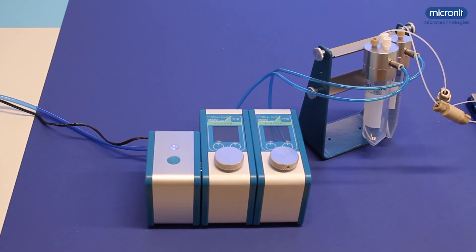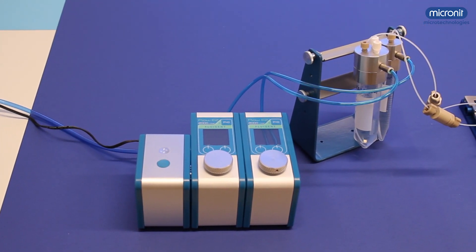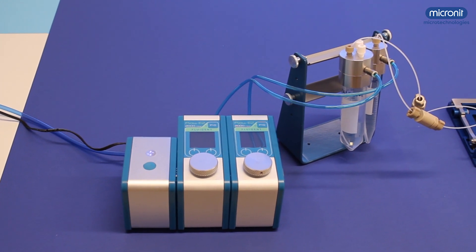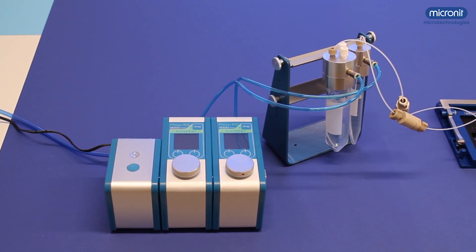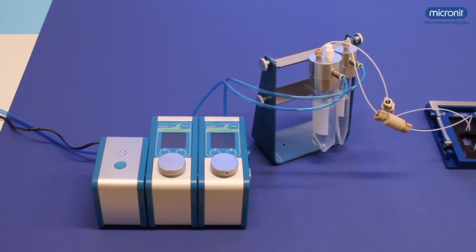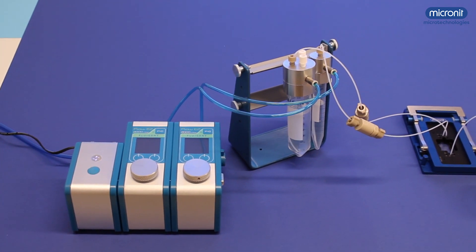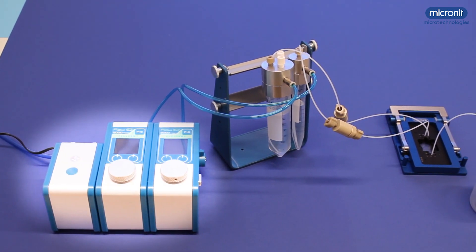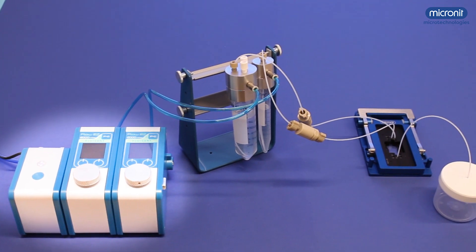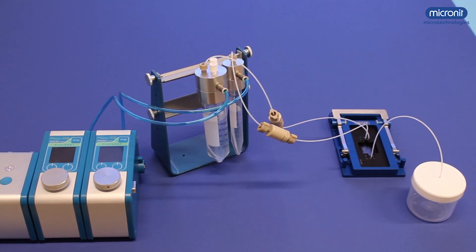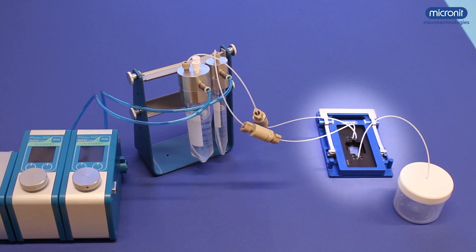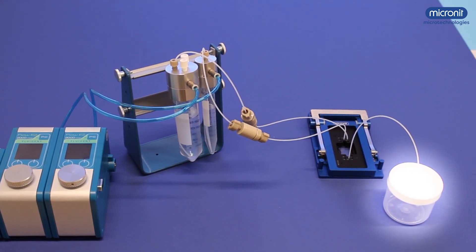This is the modular droplet generator setup, and this is what we will be working on today. The modularity of the system means you might have some other components than these, but this is a setup I like very much. Here you see a pressure controlled pump from Fluigent, fluid reservoirs, filters, the chip holder with the chip, and an emulsion reservoir.